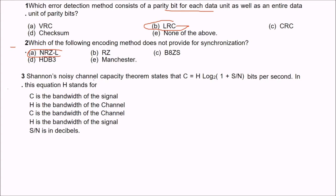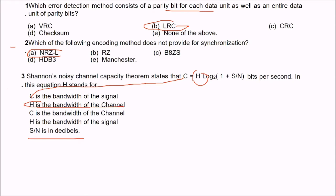Shannon's noisy channel capacity theorem states that C equals H log base 2 of (1 + S/N) bits per second. In this formula, what does H stand for? The answer is that H is the bandwidth of the channel, C is the channel capacity, and S/N is the signal-to-noise ratio in decibels.